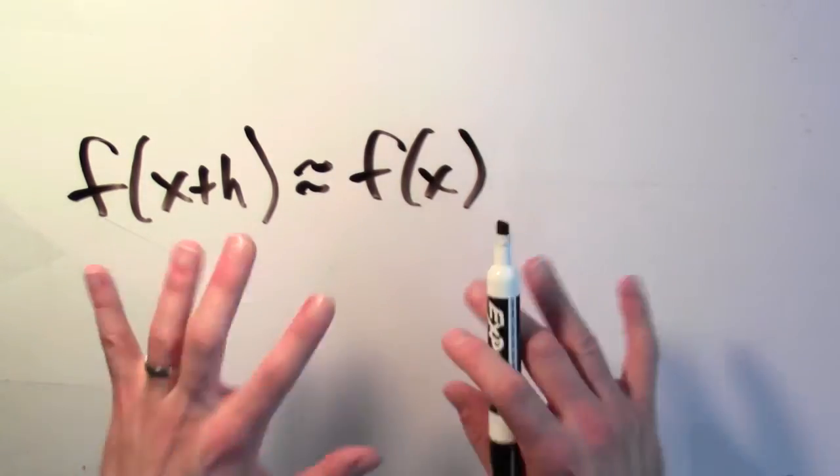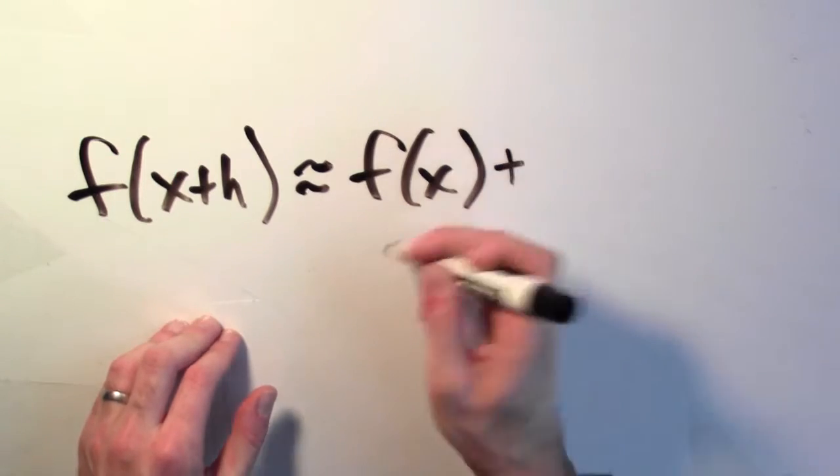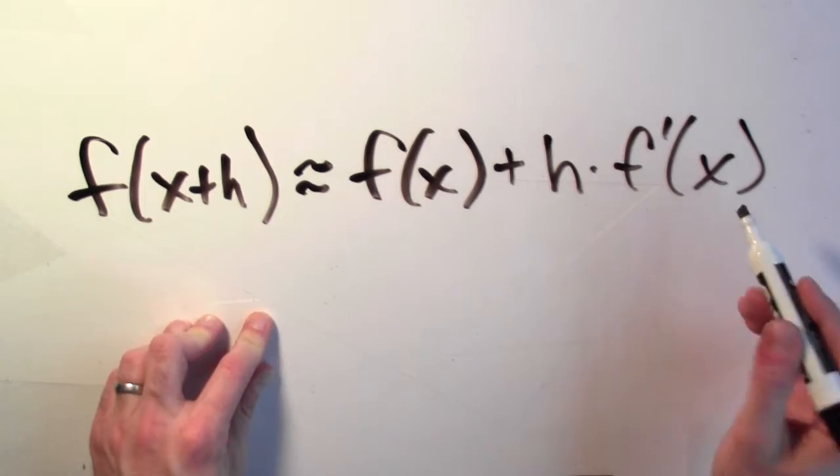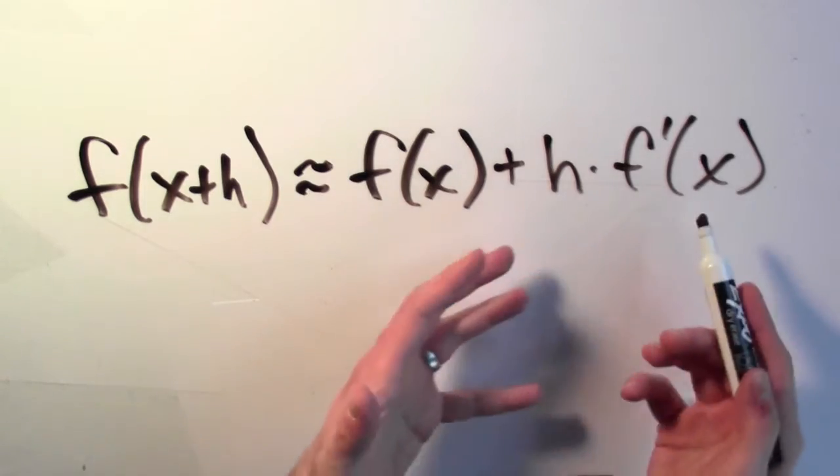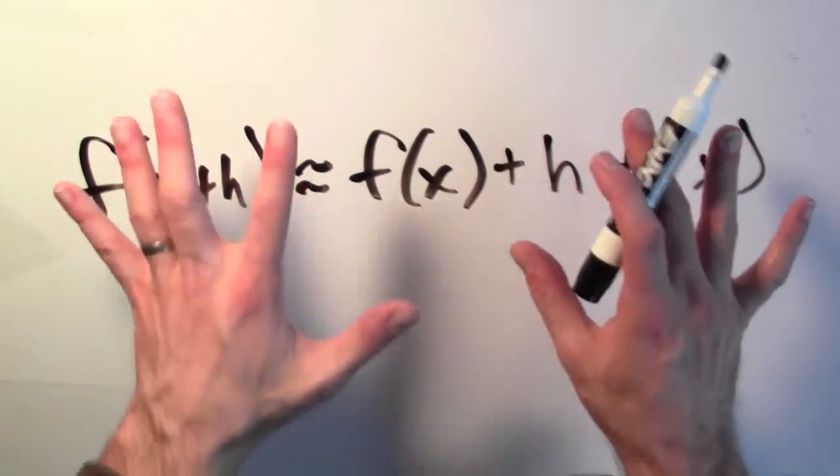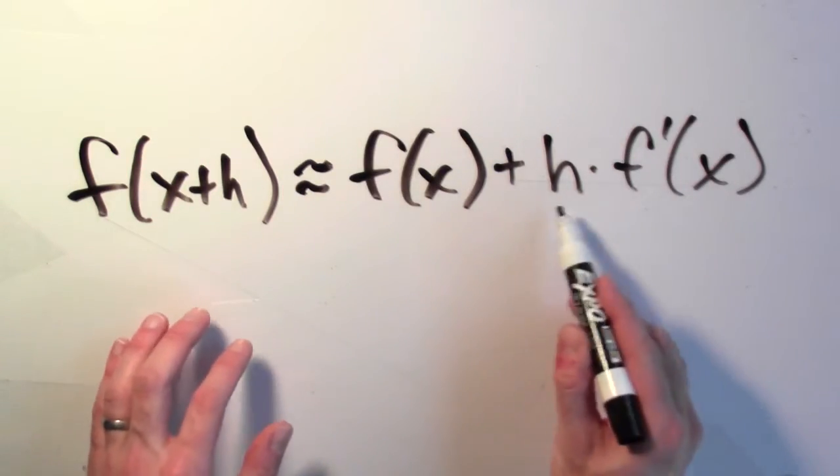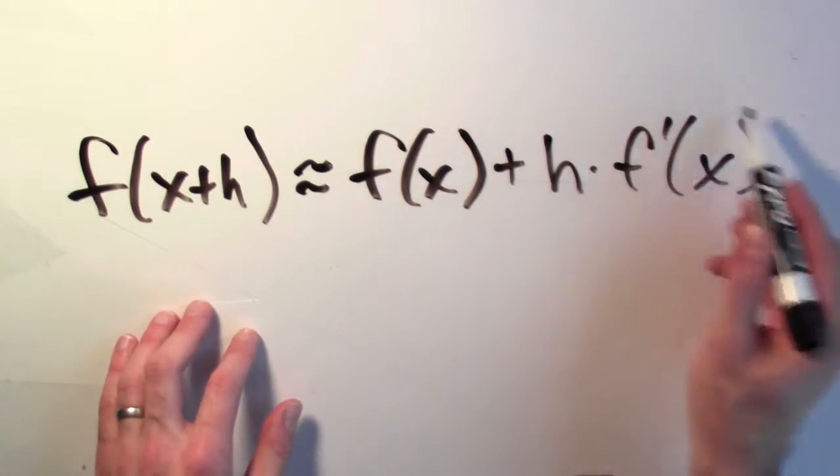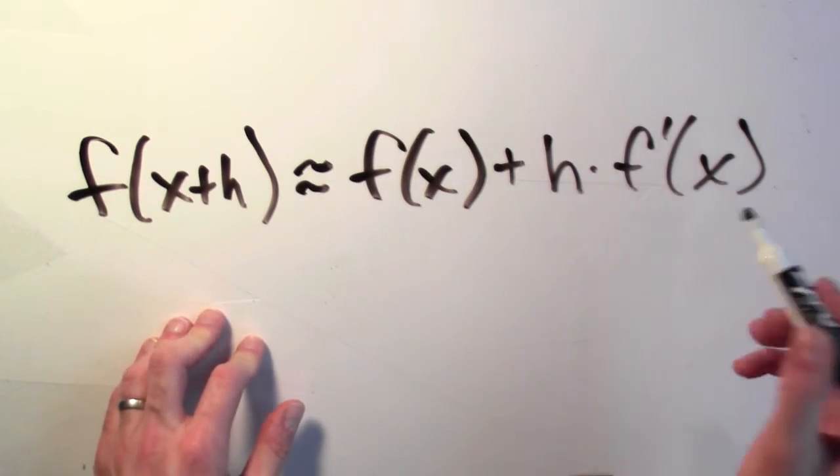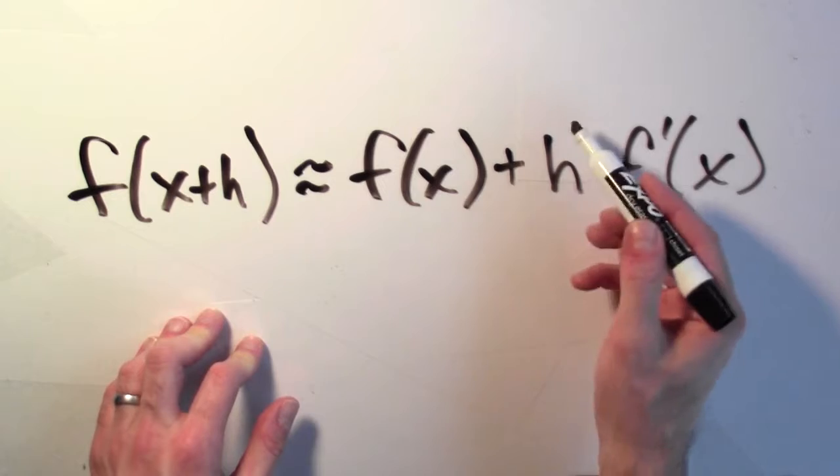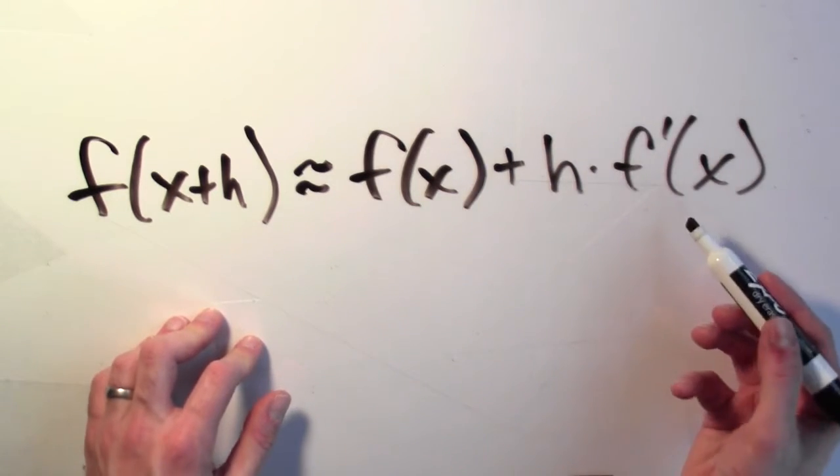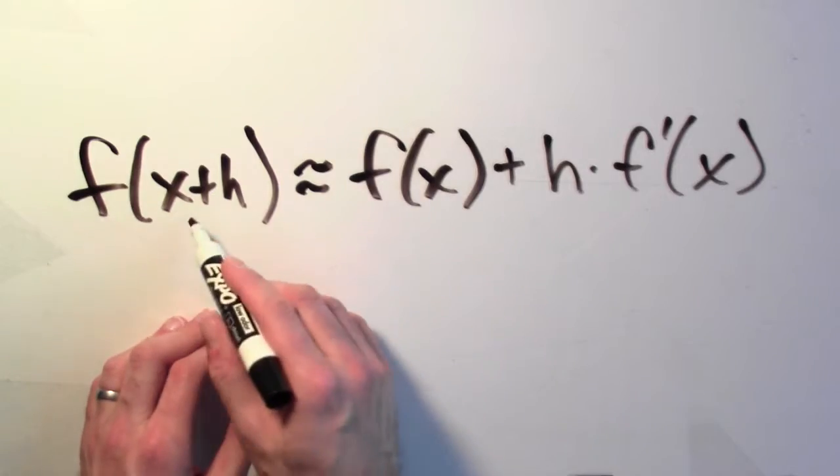But let's suppose that f is differentiable, then we can say more. I'm going to add to this h times the derivative of f at x. What does the derivative measure? It's the ratio of how much the output changes to an input change, infinitesimally. But for an actual input change of h, if I multiply it by how much the input changes, this quantity should tell me how much I expect the output to change when I go from x to x plus h.